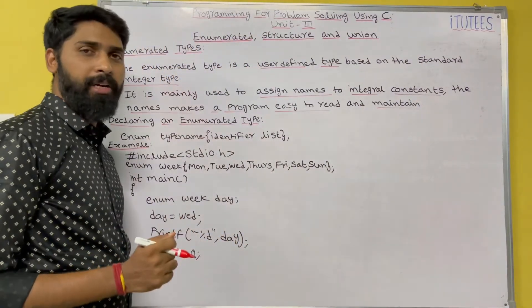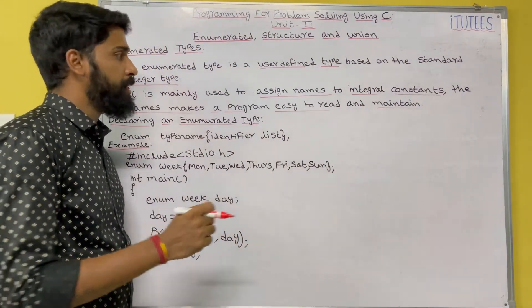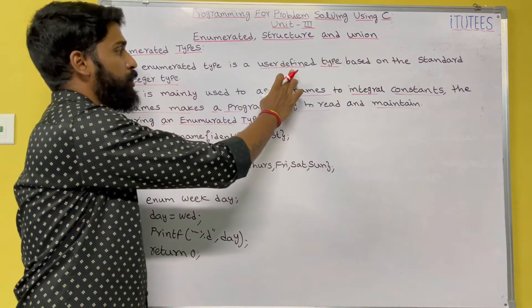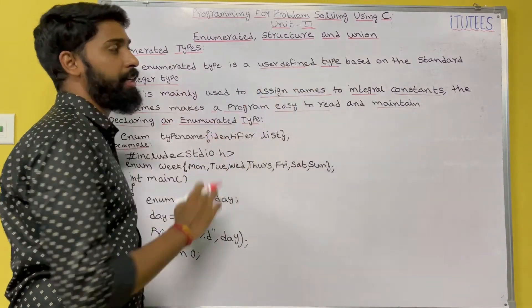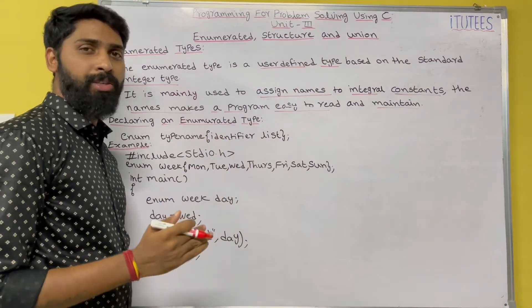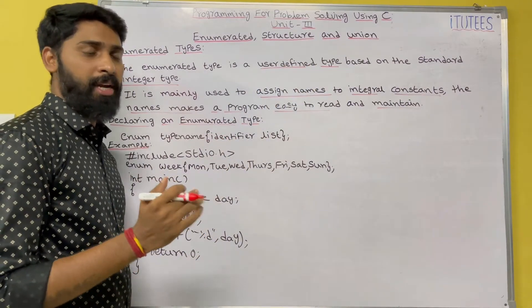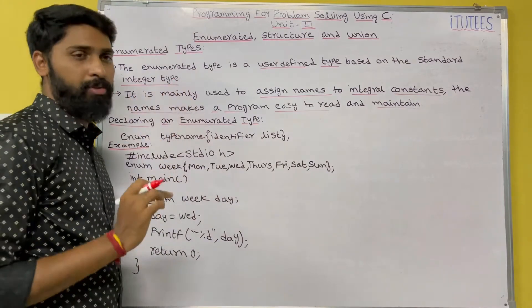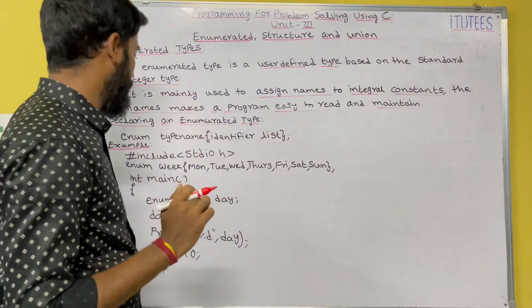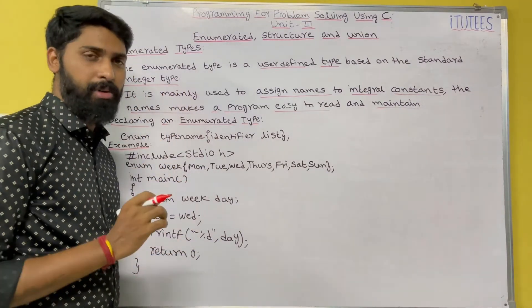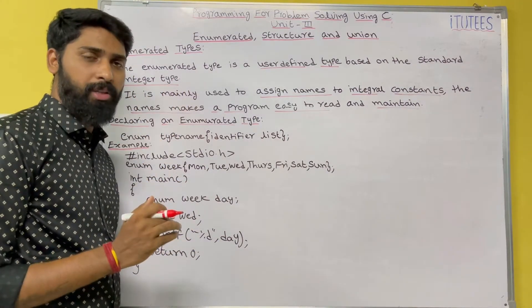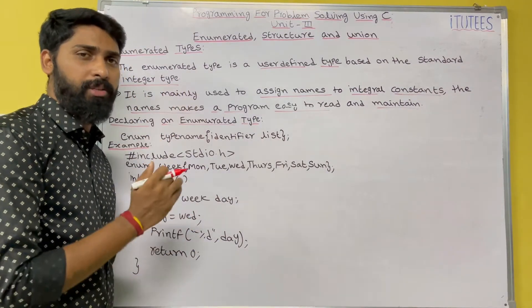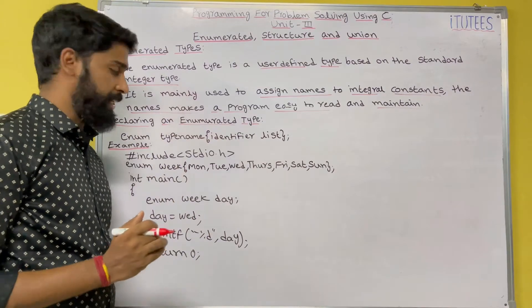The enumerated type is a user-defined type based on the standard integer type. So let's see an example. But before that, we are going to see the syntax.